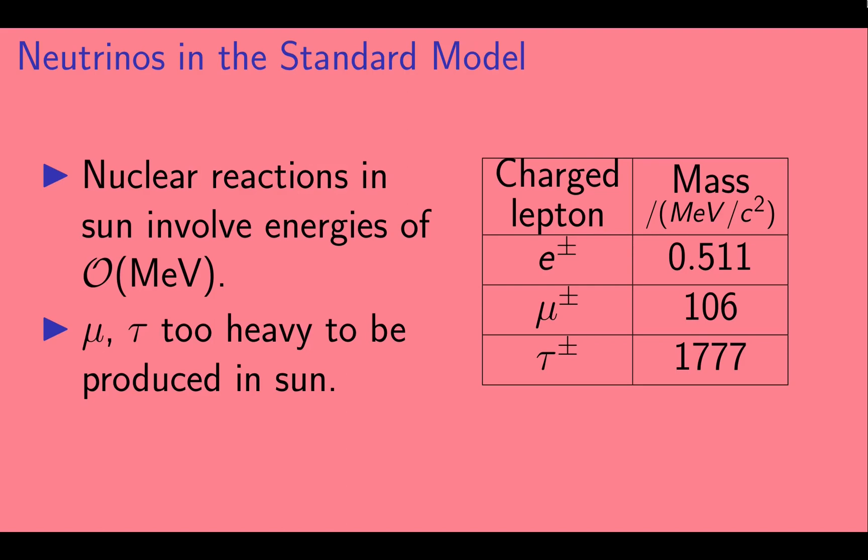Nuclear reactions in the Sun involve energies of the order of MeV. That's mega electron volts. The rest energy of the electron, which is its mass times c squared, is 0.511 MeV. So you need just over half an MeV of energy to make an electron. This is very possible in nuclear interactions.